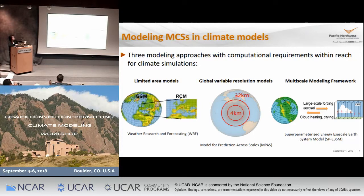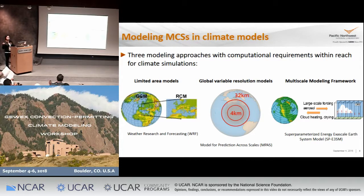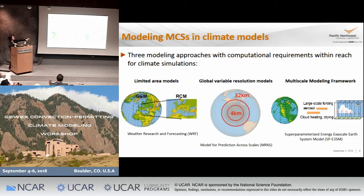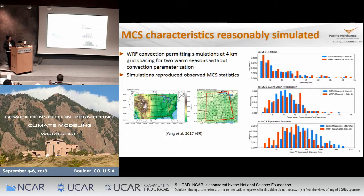At the same time, we have also been testing another approach called the multiscale modeling framework, or superparameterization, where you put in a 2D cloud-resolving model within each GCM grid cell. Previous studies have shown that this is a method where you might be able to get MCSs. Today, because of time, I'm only going to show you examples using the WRF model for the limited area model, and also using MPAS for the global variable resolution model.